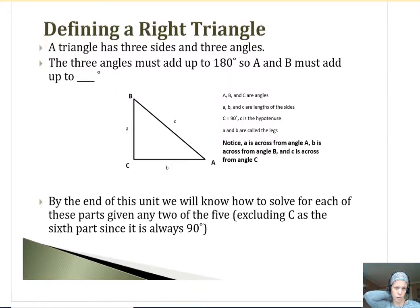Before getting into the Pythagorean theorem, real quick, when we're talking about a right triangle, a lot of times we have angle C being the 90 degree, and then A and B are the other angles of a right triangle. So if angle C adds up to 90, if we take that off right away, that means A and B have to add up to 90.